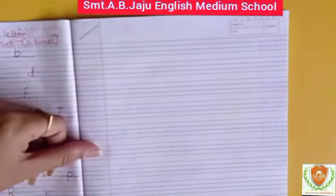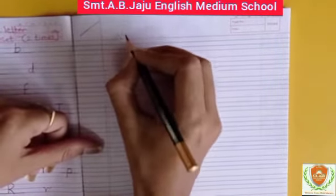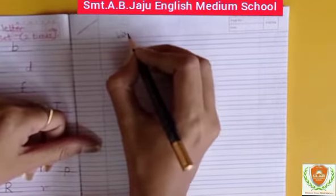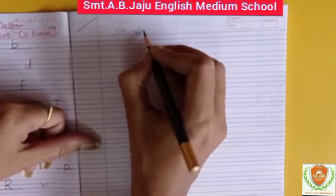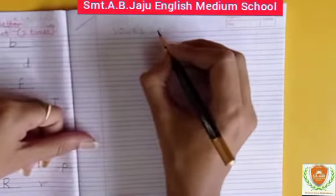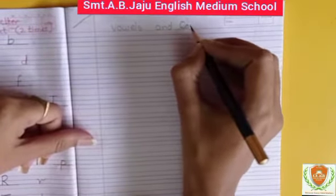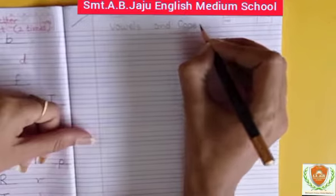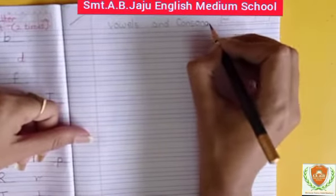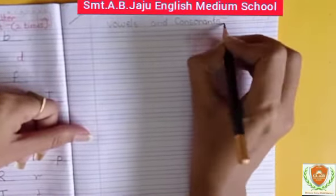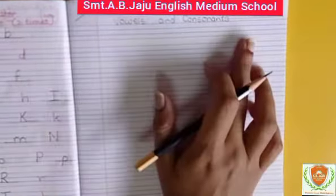Today's topic is vowels and consonants. What is the spelling of vowels? V-O-W-E-L-S. Vowels. And consonants: C-O-N-S-O-N-A-N-T-S. Consonants. So, today's topic is vowels and consonants.